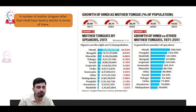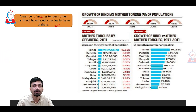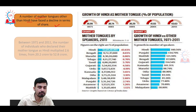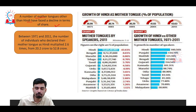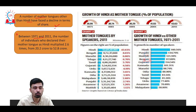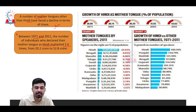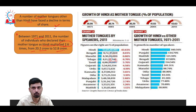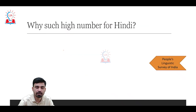Other observations show that a number of mother tongues other than Hindi have faced a decline in their share, most notably Punjabi, Assamese, and Malayalam. Between 1971 and 2011, the number of individuals declaring Hindi as their mother tongue multiplied by almost 2.6 times — from 20 crore to 52.8 crore.